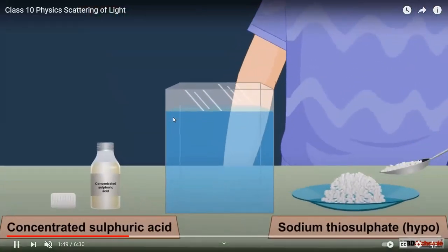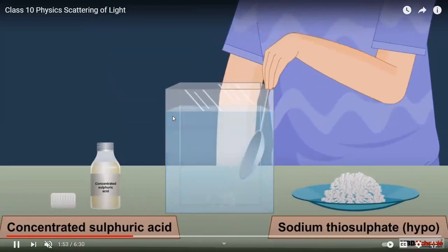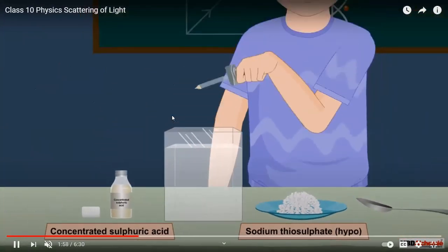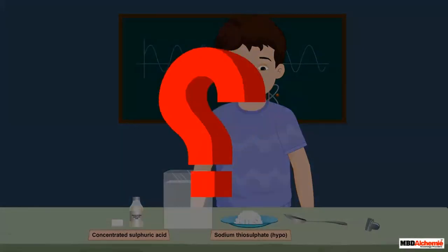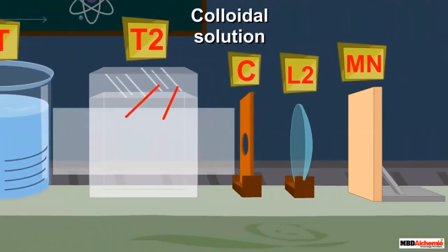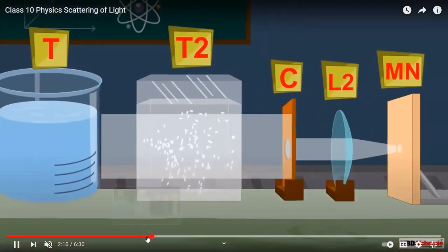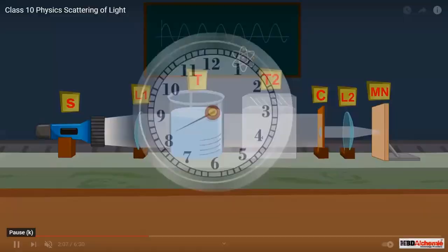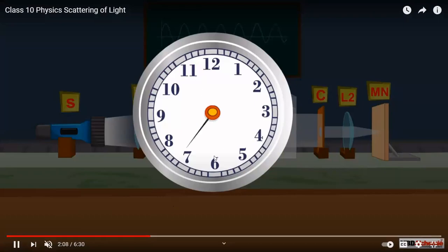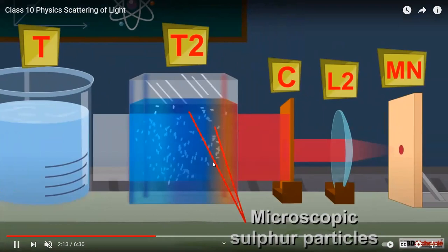Now we take another water tank and add sodium thiosulfate or hypo solution, then add 1 to 2 ml of concentrated sulfuric acid. What will happen here? Initially, due to the colloidal particles, the path of the light is being traced — previously it was not visible, but now in the colloidal solution it is traced. After a few hours, microscopic sulfur particles are formed.